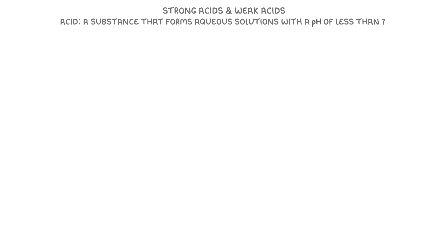An acid is a substance that forms aqueous solutions with a pH of less than 7. And the reason for this is that they ionise in aqueous solutions to release hydrogen ions, which just means they split or dissociate into their ions.